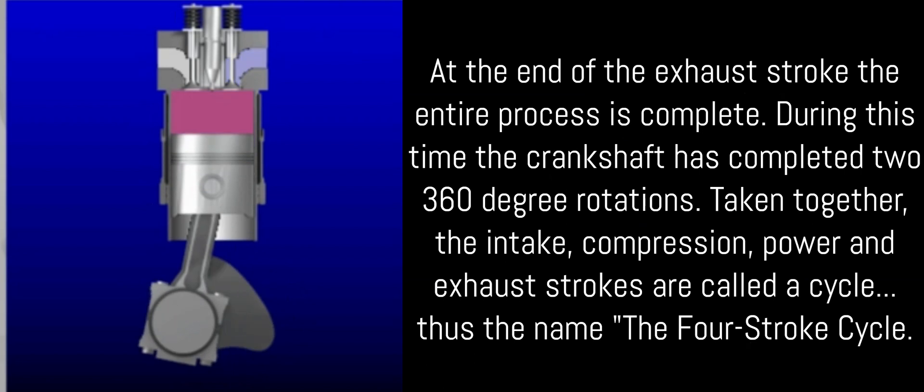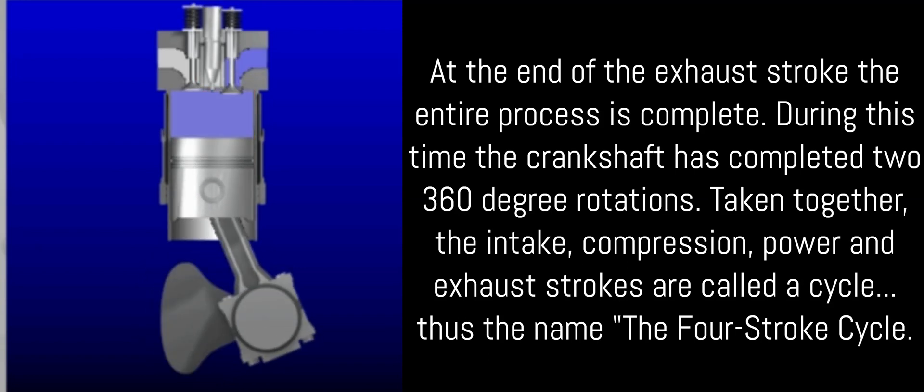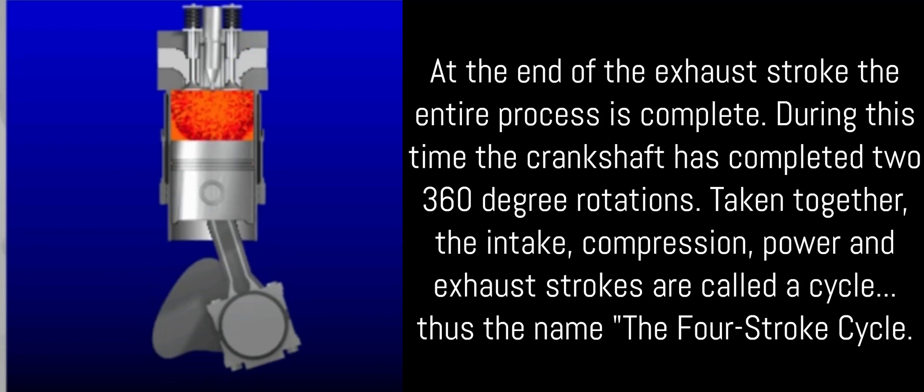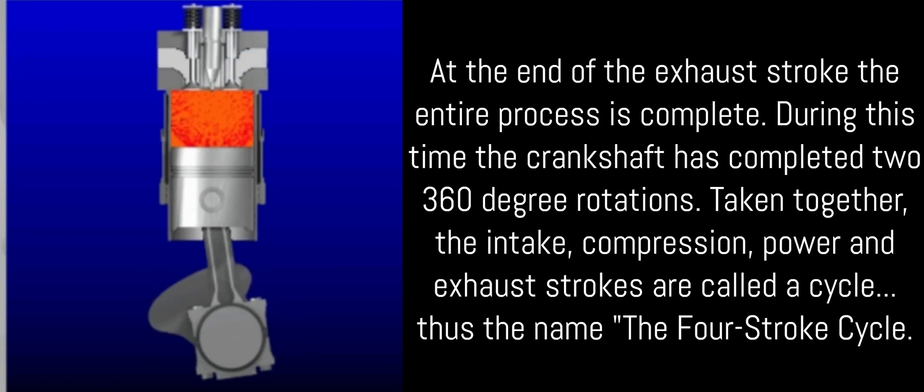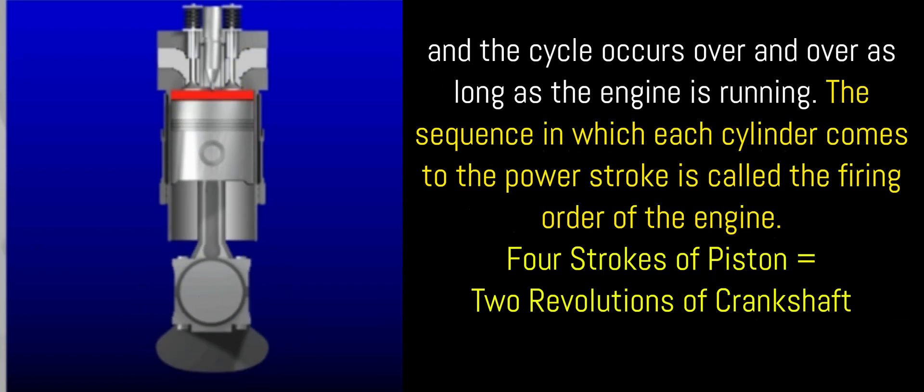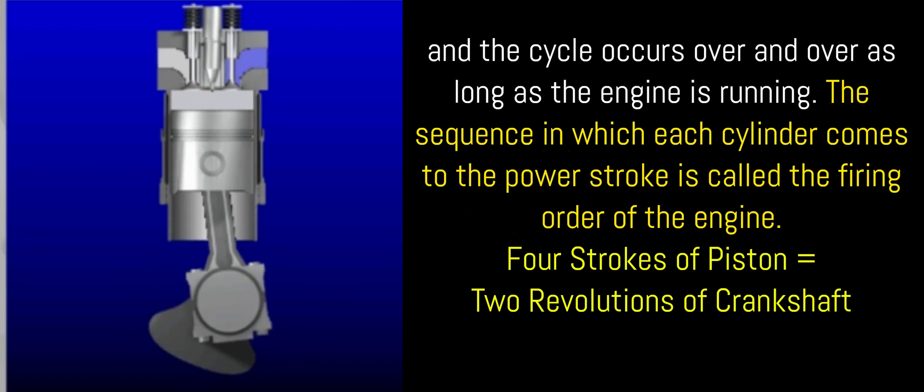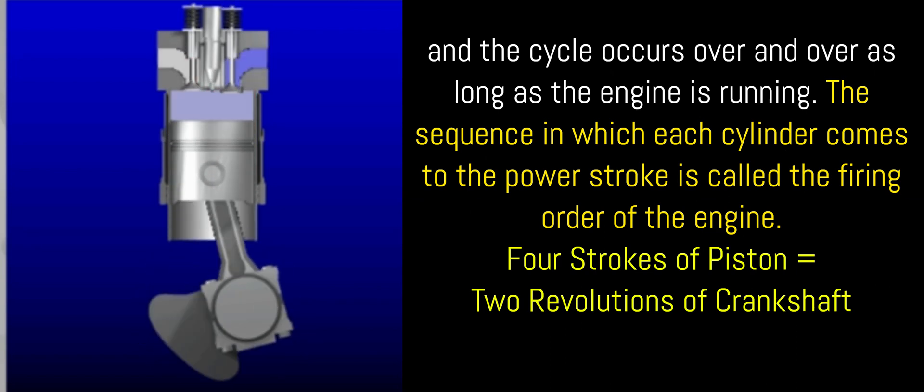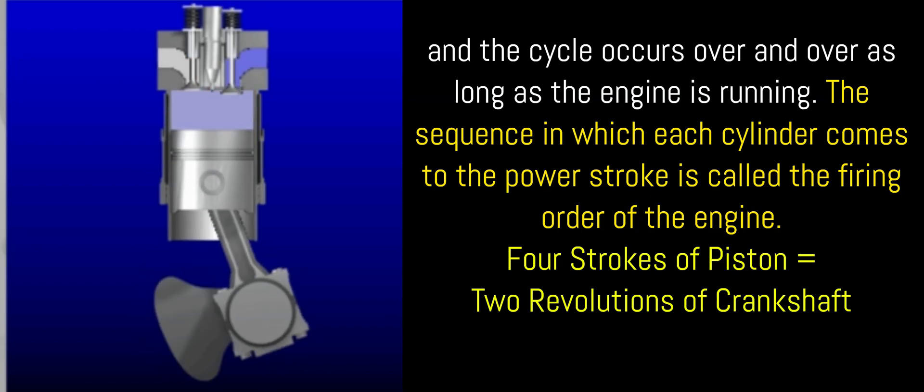Four stroke cycle: At the end of the exhaust stroke, the entire process is complete. During this time, the crankshaft has completed two 360 degree rotations. Taken together, the intake, compression, power, and exhaust strokes are called a cycle, thus the name, the four-stroke cycle. And the cycle occurs over and over as long as the engine is running. The sequence in which each cylinder comes to the power stroke is called the firing order of the engine.